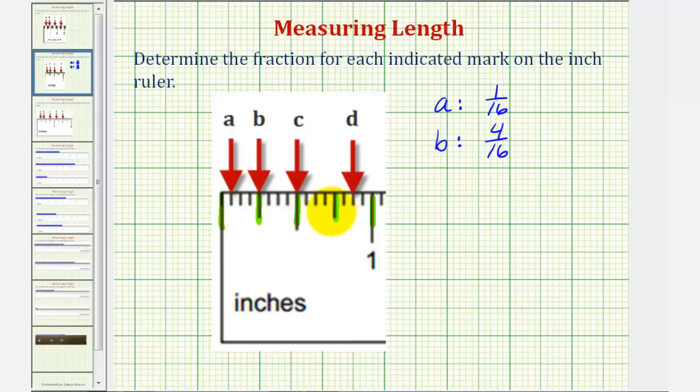So each of these tick marks represents one-fourth of an inch, so we can say that B is equal to one-fourth.